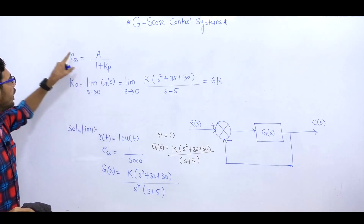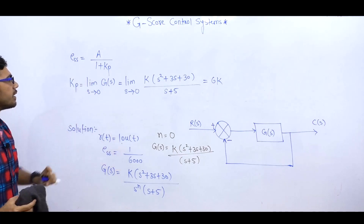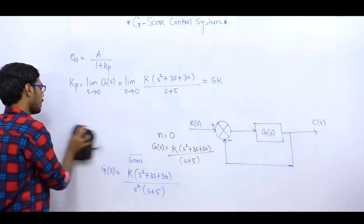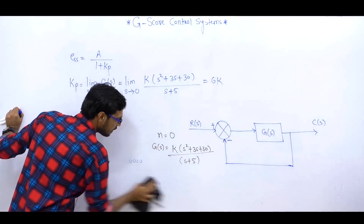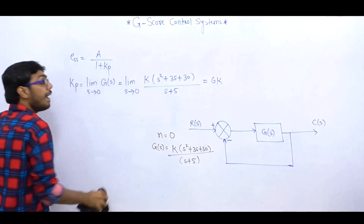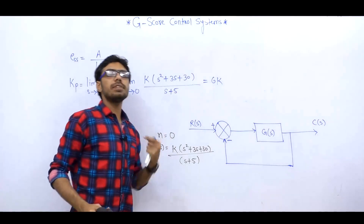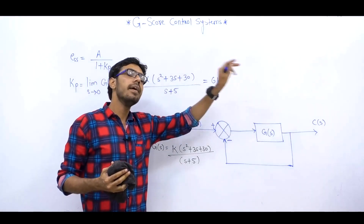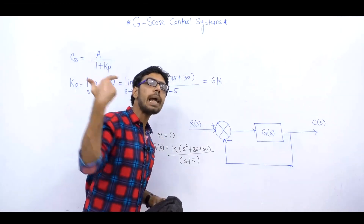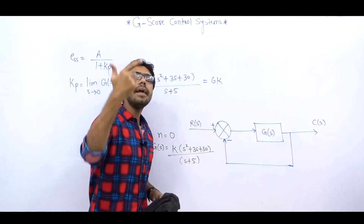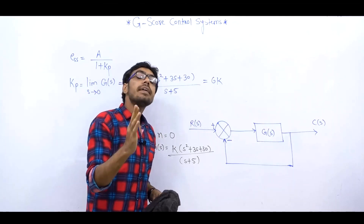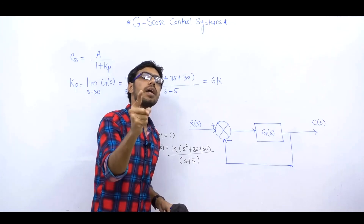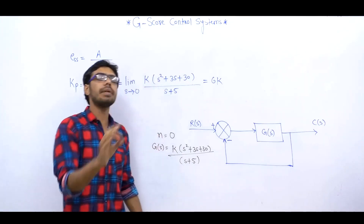तो KP = 6K आया। KP को यहाँ पर रख दो — 6K, A को रख दो — 10, और STEADY STATE ERROR कितना है — 1/6000। तो हमें K की value मिल जाएगी। यह question बहुत interesting था — सबसे पहले हमें TYPE DETERMINE करना था। TYPE represent कर रहा था कि अगर STEP INPUT है तो FINITE NON-ZERO ERROR तब ही generate होगा जब SYSTEM TYPE ZERO हो।